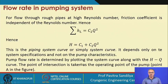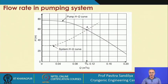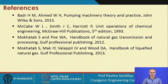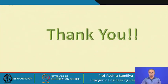To find the flow rate, we first plot the H-Q system curve (generated from the energy balance) and overlay the pump H-Q characteristic curve provided by the manufacturer. The point of intersection of these two curves is the operating point of the pump — the flow rate at which the pump should operate. This is how we determine the flow rate in a pumping system. These are the various books you can refer to for more detail about pump characteristics and the other topics covered. Thank you.